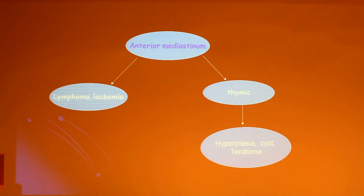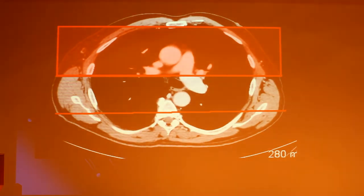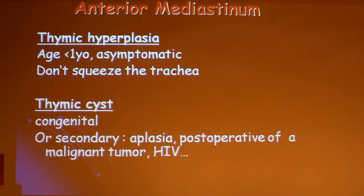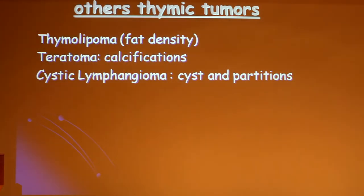In the anterior mediastinum, it could be thymic hyperplasia, a cyst, or a teratoma. Thymic hyperplasia occurs before puberty. It is asymptomatic. It could be congenital or secondary to thymic hyperplasia, postoperative of a tumor, or HIV. Other thymic tumors include thymolipoma — you can see fat density on CT — teratoma — you can see calcification — and cystic lymphoma, where you can see cysts and partitions.